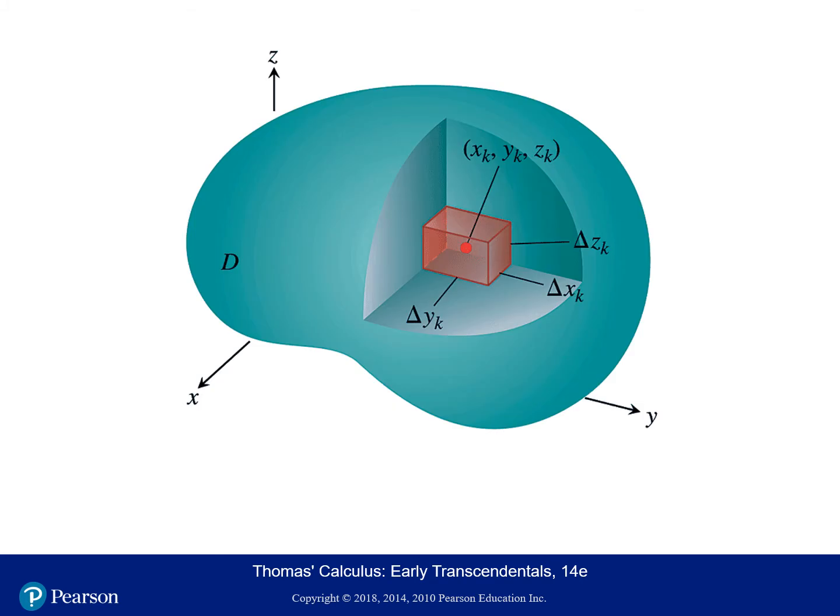When it comes to partitioning the region over which we're integrating, because it's a three-dimensional region, we are going to partition it using rectangular boxes or rectangular prisms. For double integrals, when we partitioned the region we were integrating over, it was into rectangular pieces with a length and a width. Now, when we partition our region D in space, each unit of our partition has a length, a width, and a height as well.